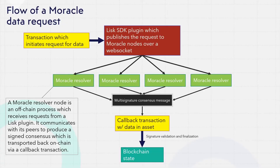The flow of a transaction which uses Moracle looks like this. First, we have a transaction which initiates a request for data. This transaction is picked up by Moracle's Lisk SDK plugin which publishes the request for data to Moracle resolver nodes over web socket. A Moracle resolver node is an off-chain process which simply receives requests from a Lisk plugin. It communicates with its peers to produce a signed consensus which is transported back on-chain via a callback transaction. The blockchain transaction logic validates the multi-signature consensus message to ensure that it has the right number of signatures from resolvers that the developer trusts.